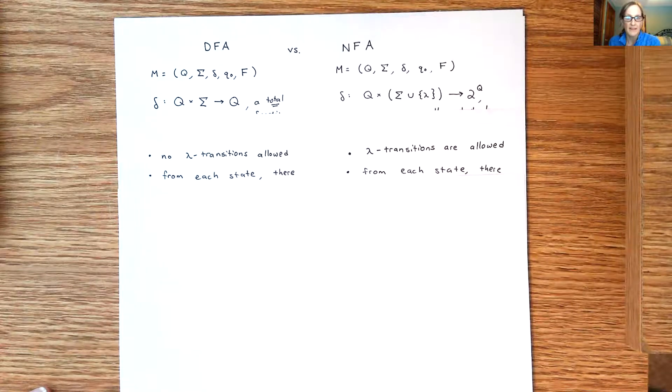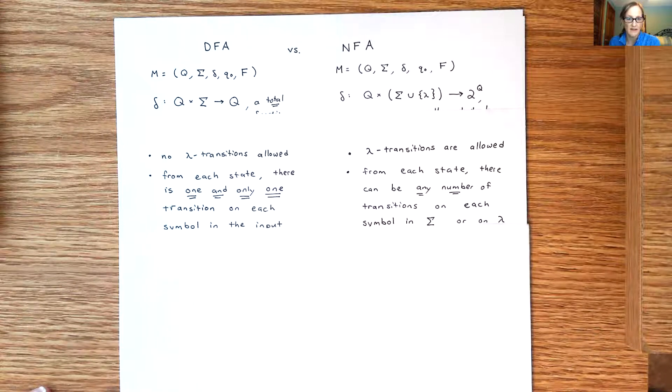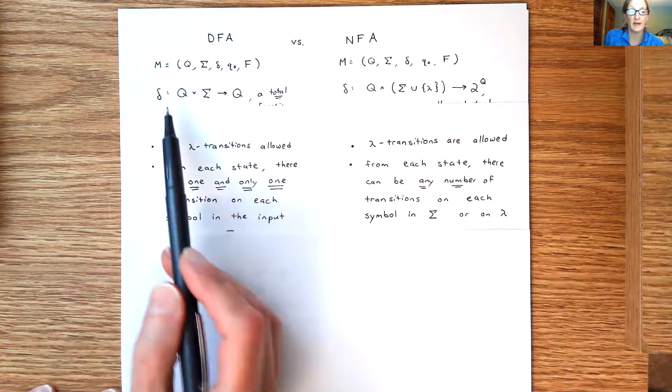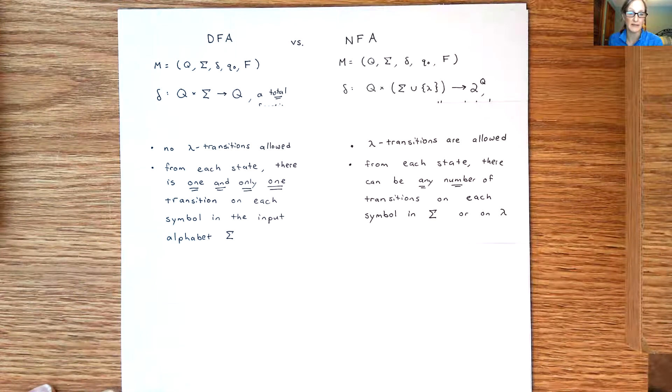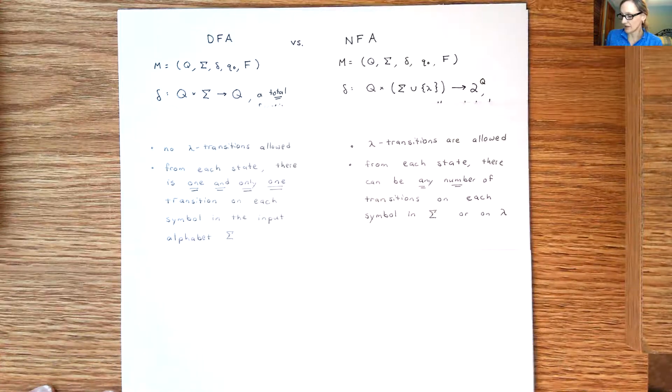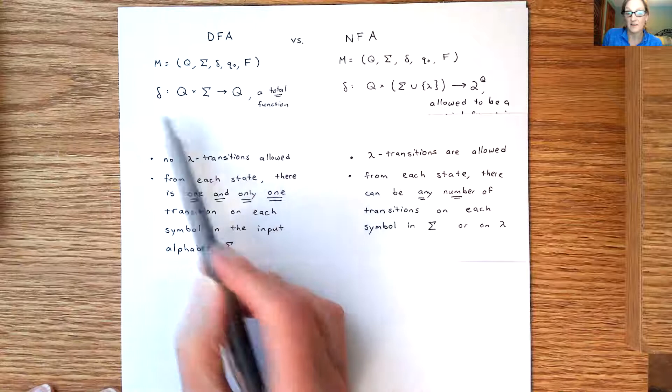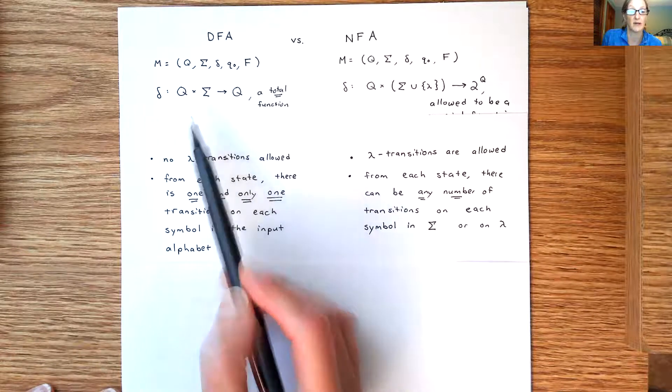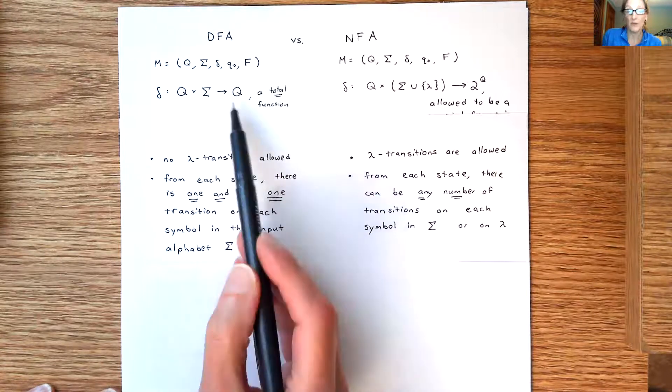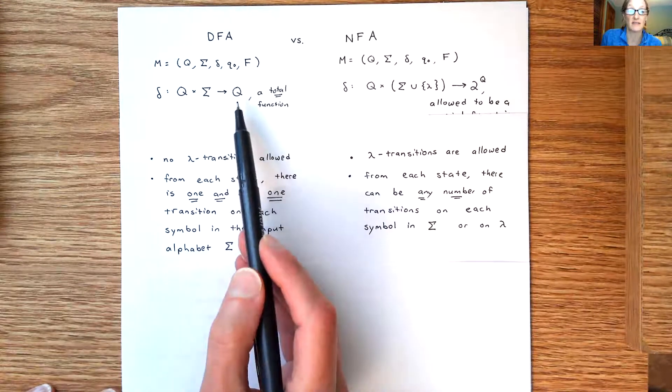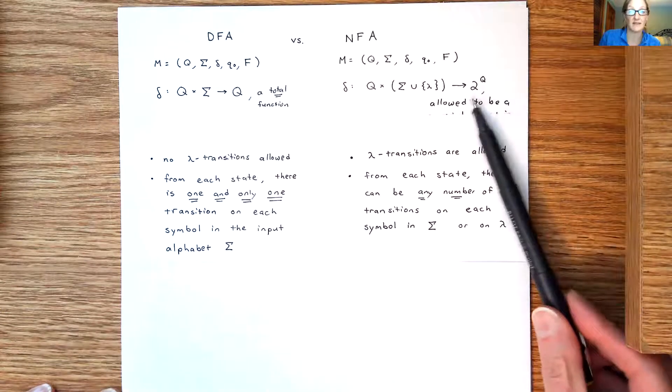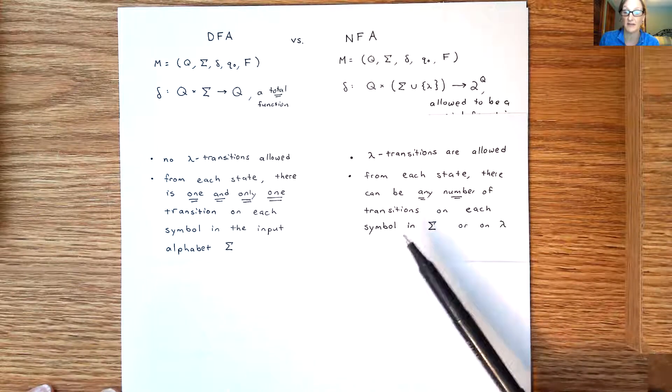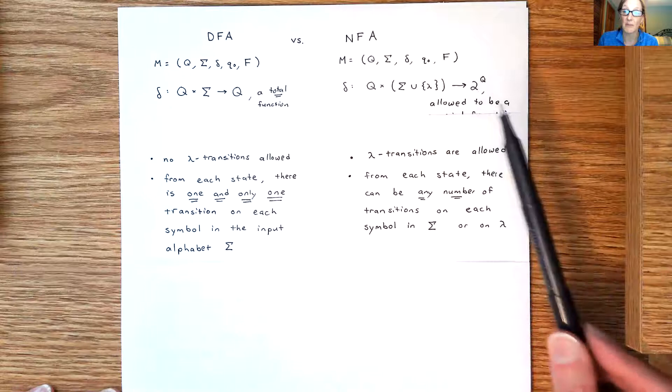Then the second part, second big observation is that from each state for a DFA there is one and only one transition on each symbol in the input alphabet Sigma. The way that we get that observation is two things: first of all since Delta is a total function, every single ordered pair has to be mapped somewhere so there is one, and then there's only one because the range is just a state, one single state, not a set of states like for an NFA. So for an NFA from each state there can be any number of transitions on each symbol in Sigma or on lambda.